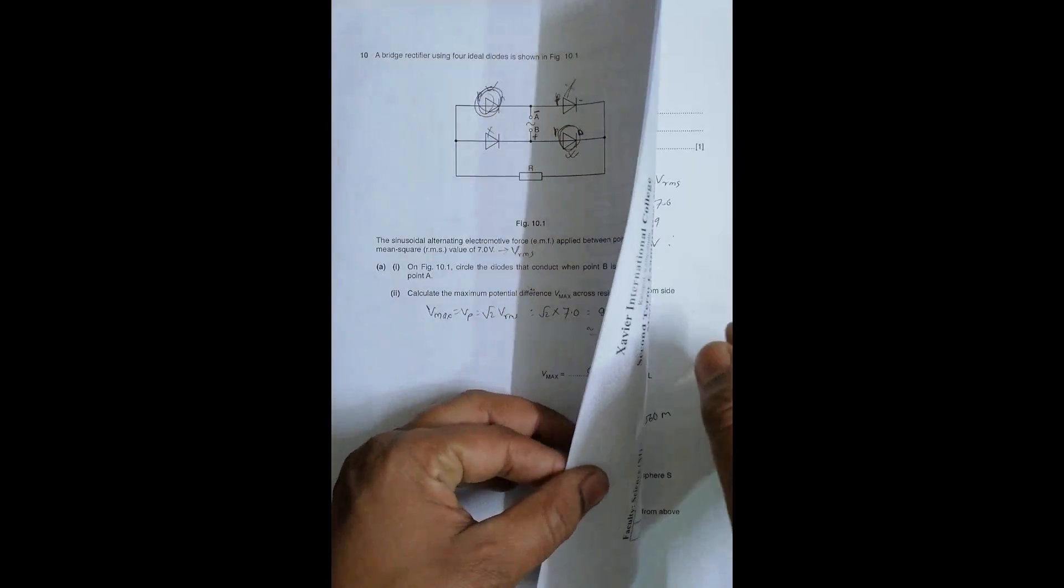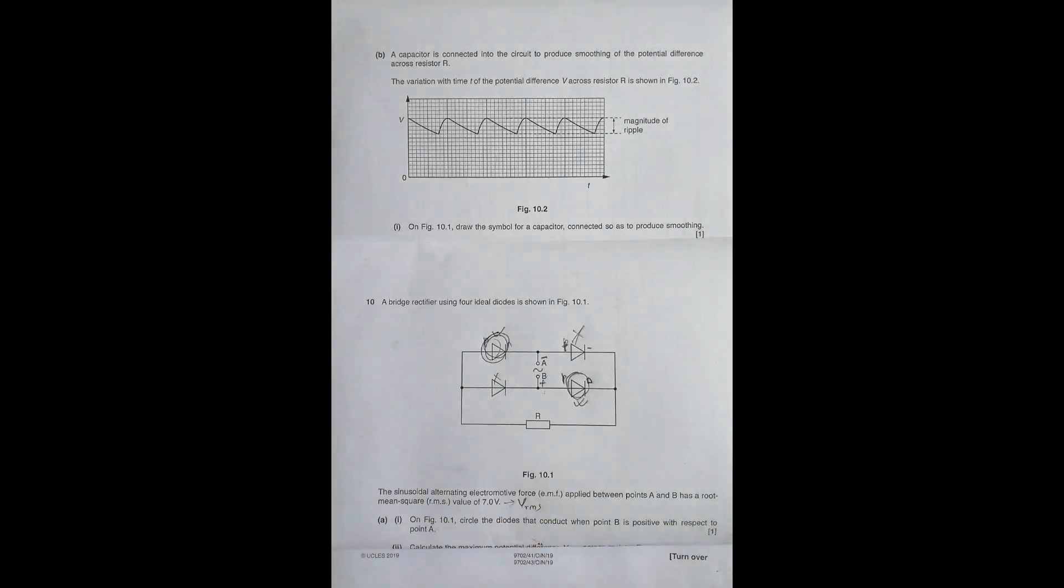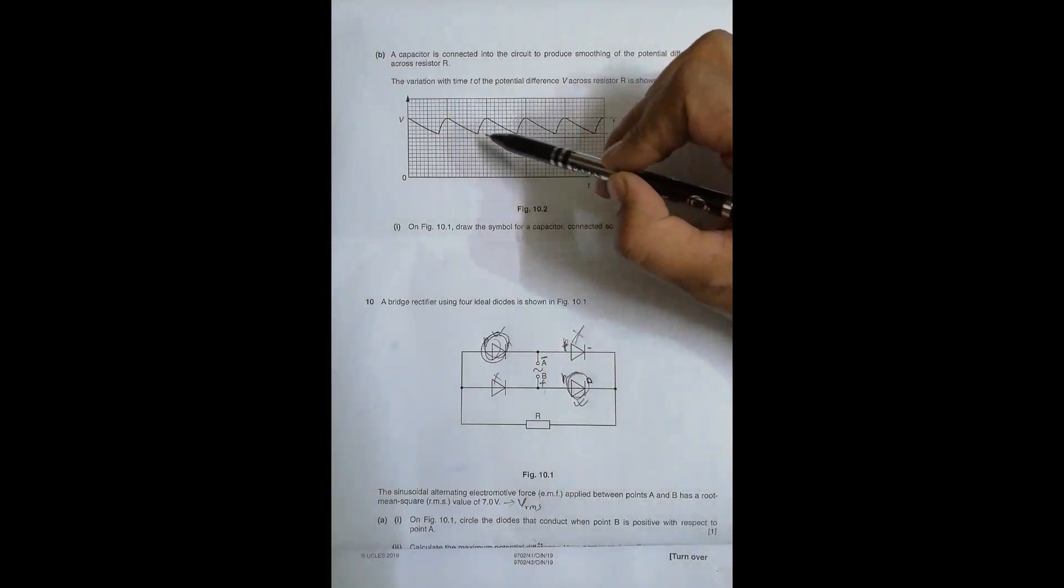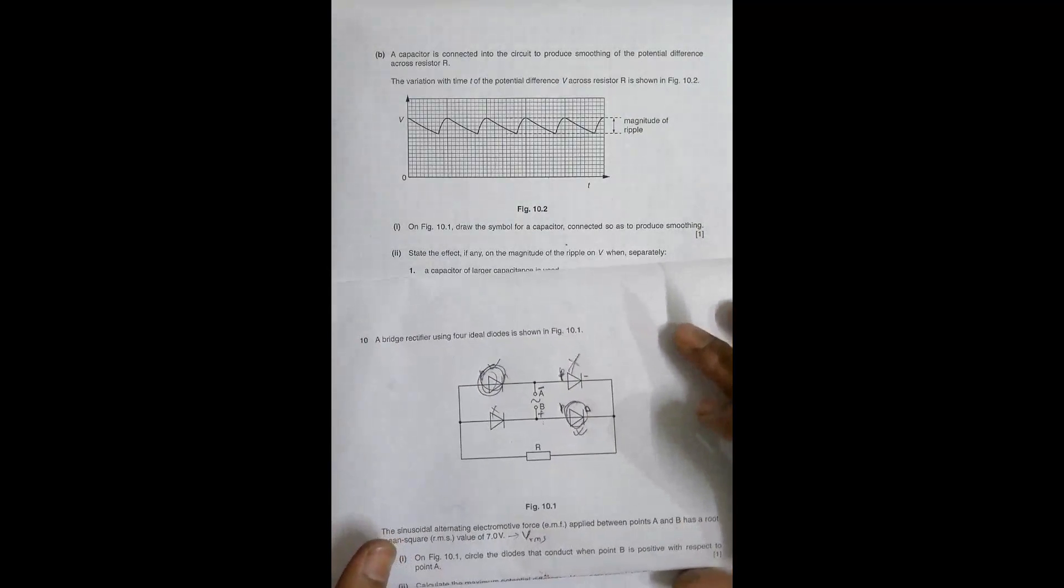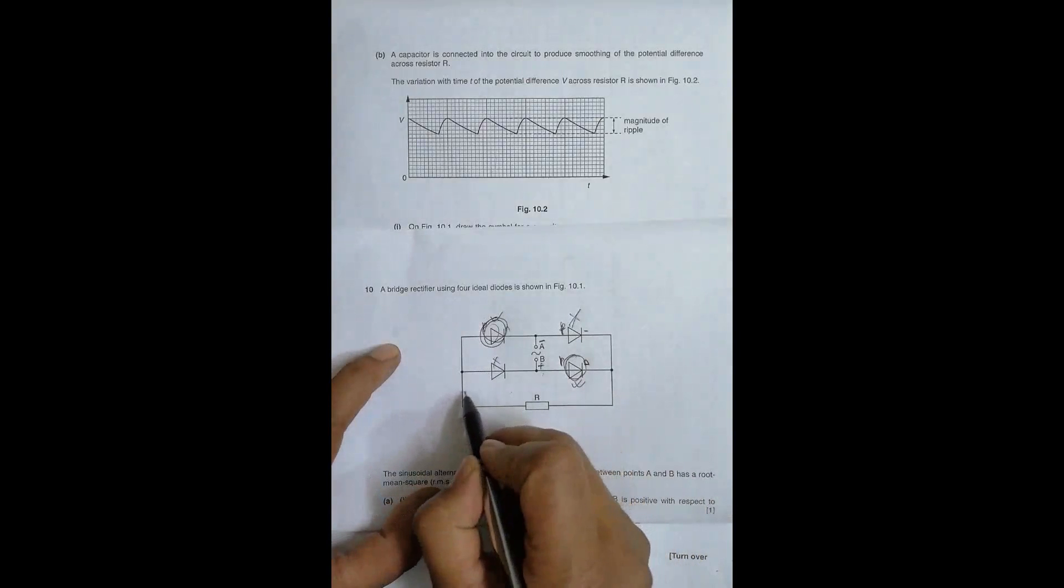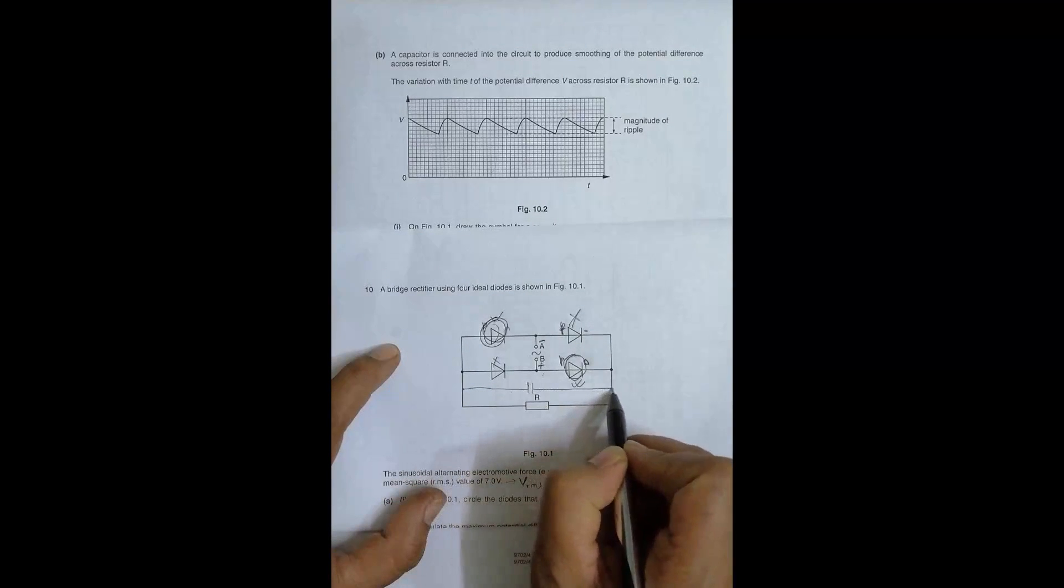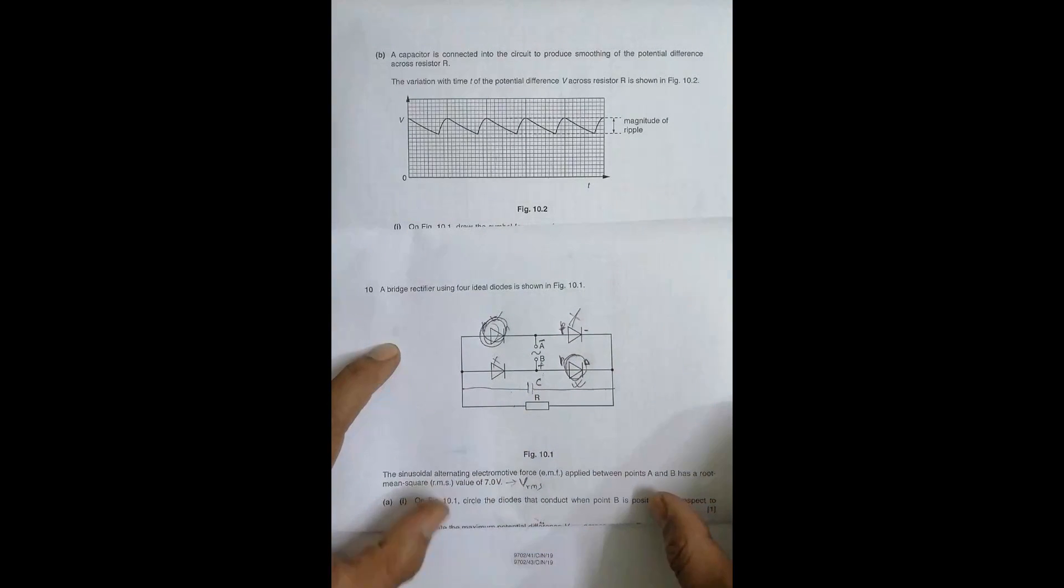Now the next question. A capacitor is connected into the circuit to produce smoothing of the potential difference across resistor R. The variation with time T of the potential difference V across the resistor is shown. So there is a rise in voltage, then decrease in voltage, rise, decrease and so on. On figure 10.1 draw the symbol for a capacitor connected so as to produce smoothing. So in order to produce smoothing the capacitor has to be connected across the resistor. So I can connect the capacitor in any way I like. It should be across the resistor. So either I can connect from here to here, here to here. I can connect from here to here or from here to here and so on. So anyway it should be parallel to the resistor of R.